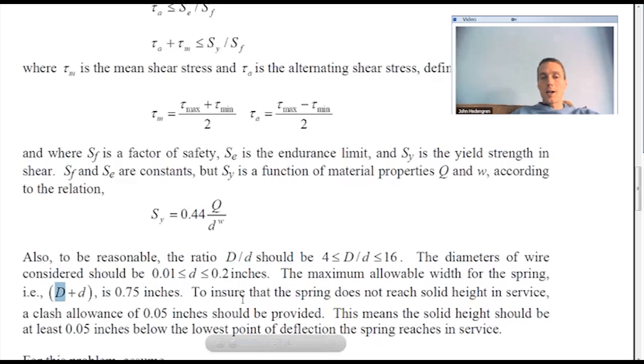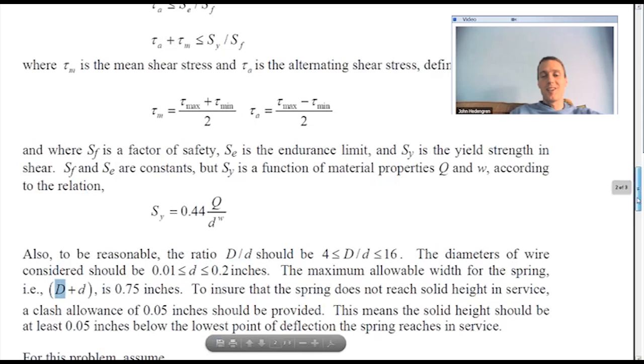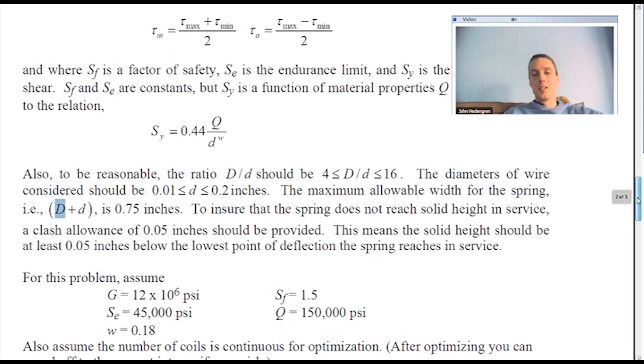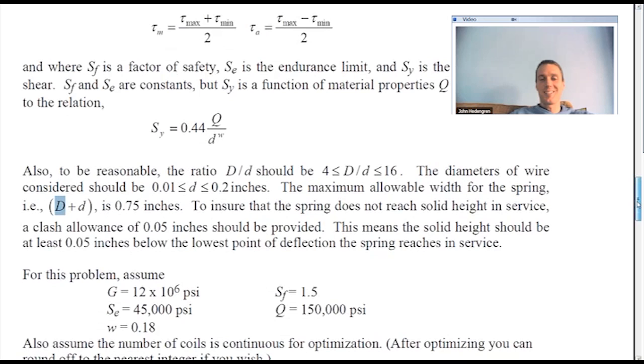Then a clash allowance. We don't want it to get too close to the solid height, so it has to be at least 0.05 inches away from the solid height when it's going through its deflection cycles. A lot of constraints here, a lot of nonlinear relationships. It's an interesting problem. It took me a while to just set it up and get it working as well. Frank, how long did it take you?